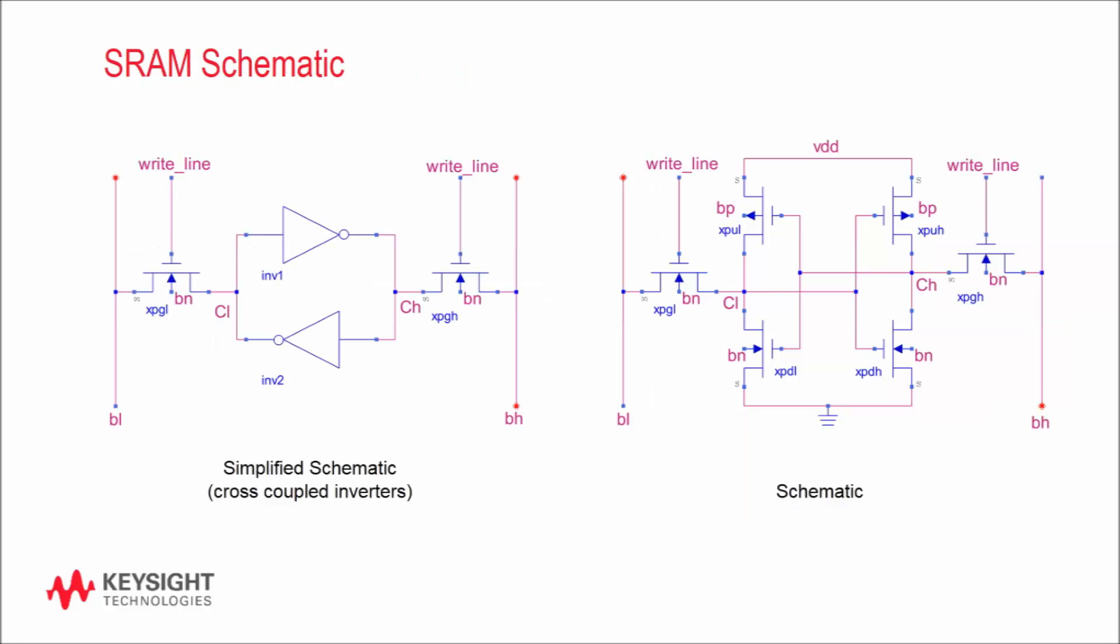Now what does a SRAM cell look like? To answer that, let's take a closer look at this schematic of a typical six transistor SRAM cell. As you can see, on the left is a simplified block diagram with cross-coupled inverters reinforcing the state of the memory cell. The memory information is stored at nodes CL and CH.